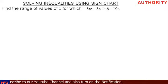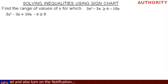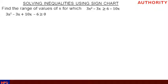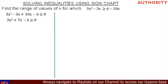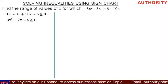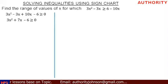Let's take all the terms on the right hand side to the left hand side. So we're going to say 3x squared minus 3x, and when minus 10x comes over it will be plus 10x, and when 6 comes over it will be minus 6, giving us greater than or equal to 0. So we have 3x squared plus 7x minus 6 is greater than or equal to 0.